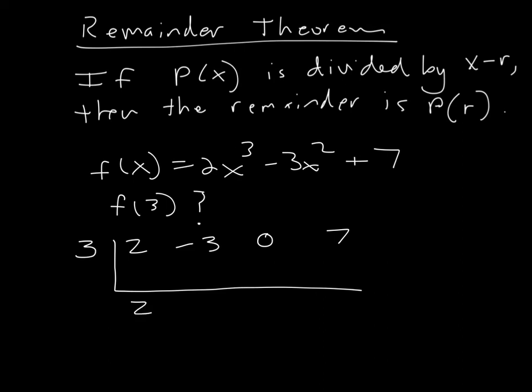Drop down the 2, multiply, 3 times 2 is 6, add, you get 3, 3 times 3 is 9, add, you get 9, and then 3 times 9 is 27, and 27 plus 7 is 34.